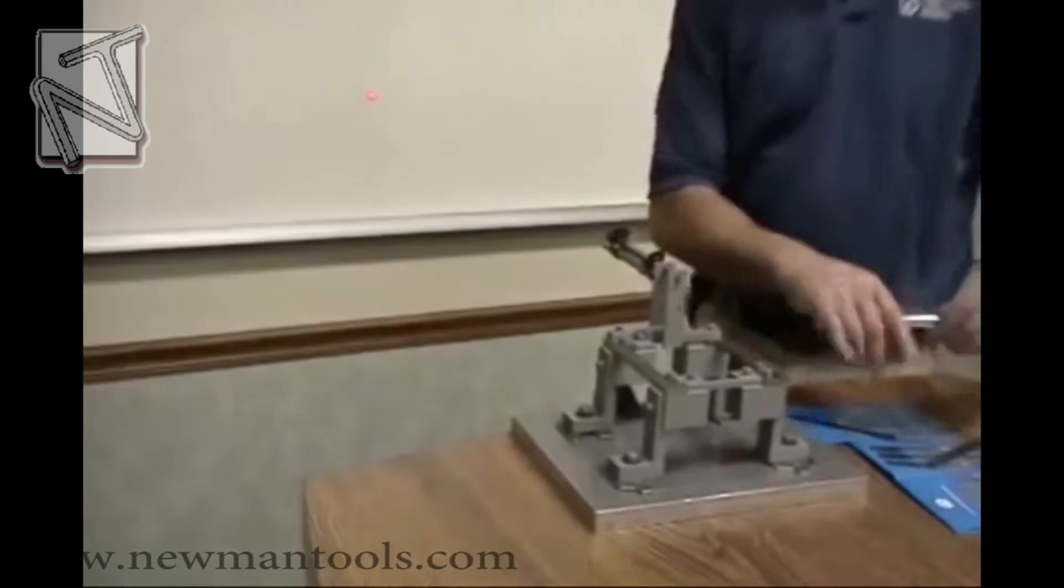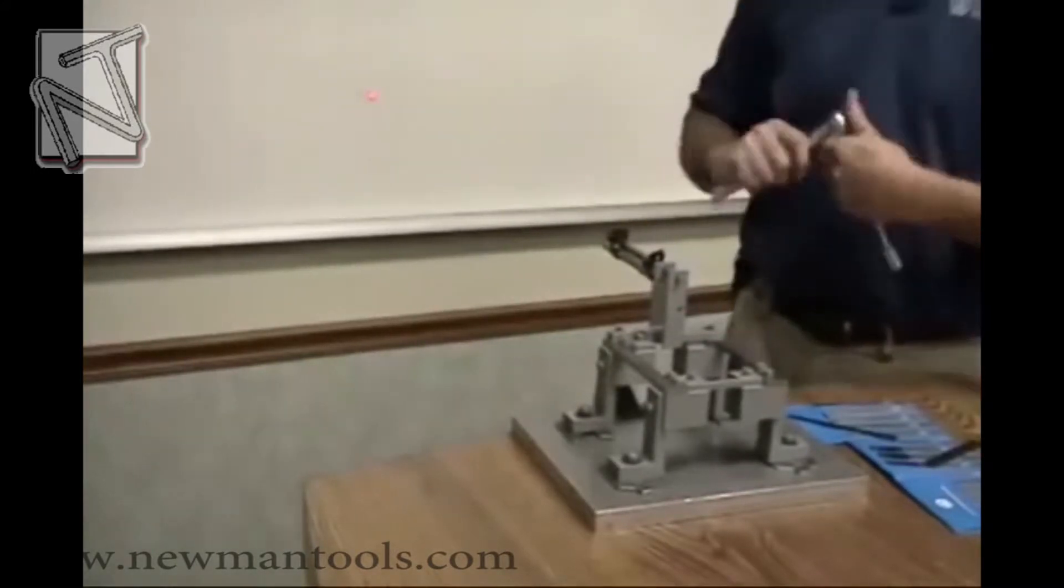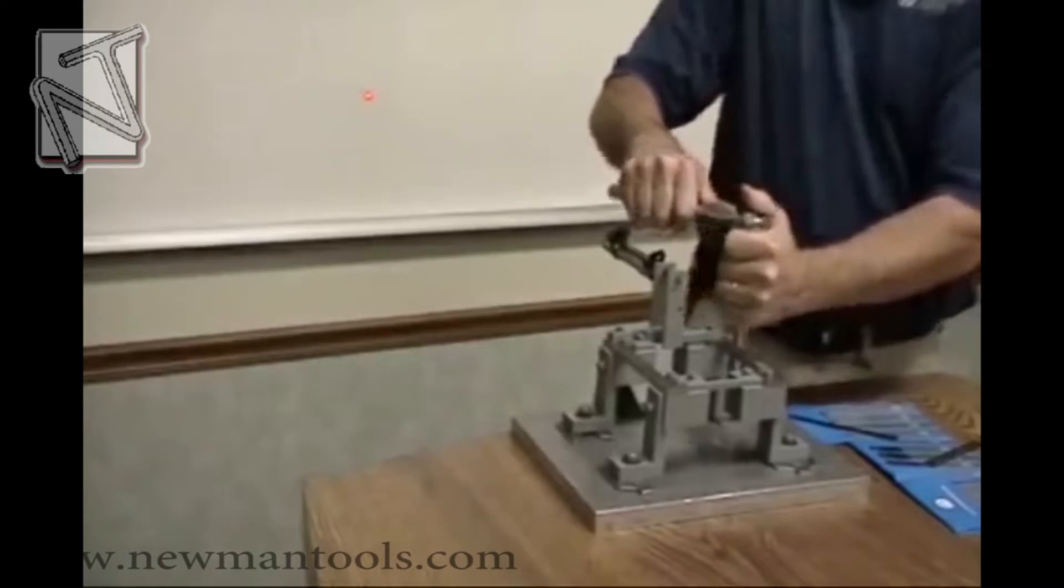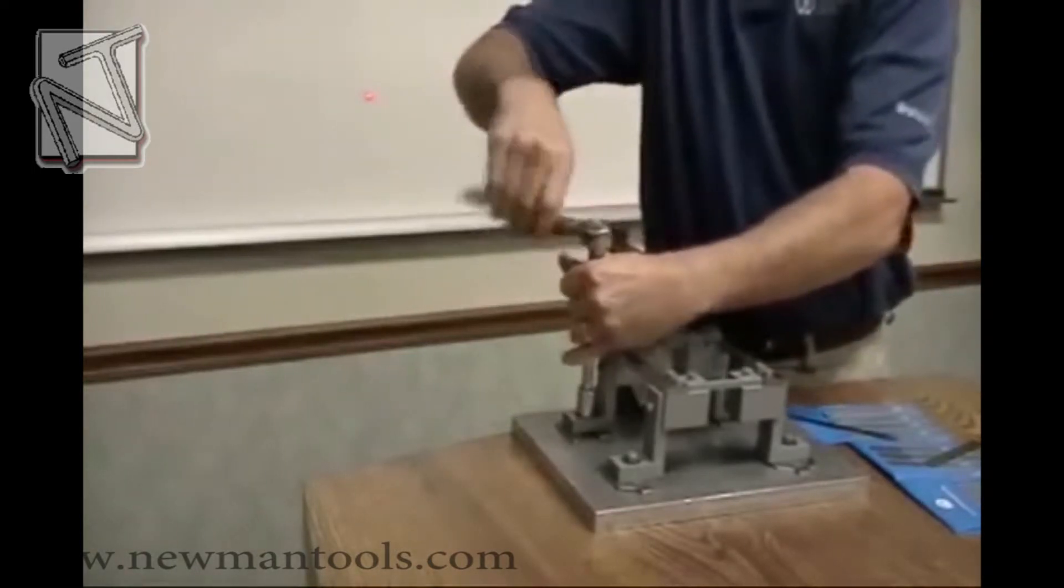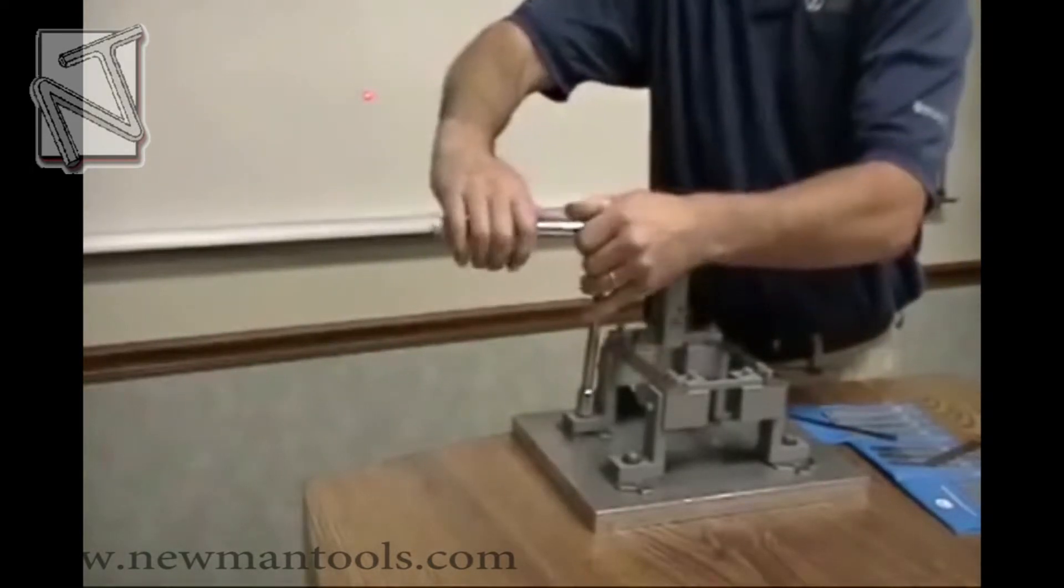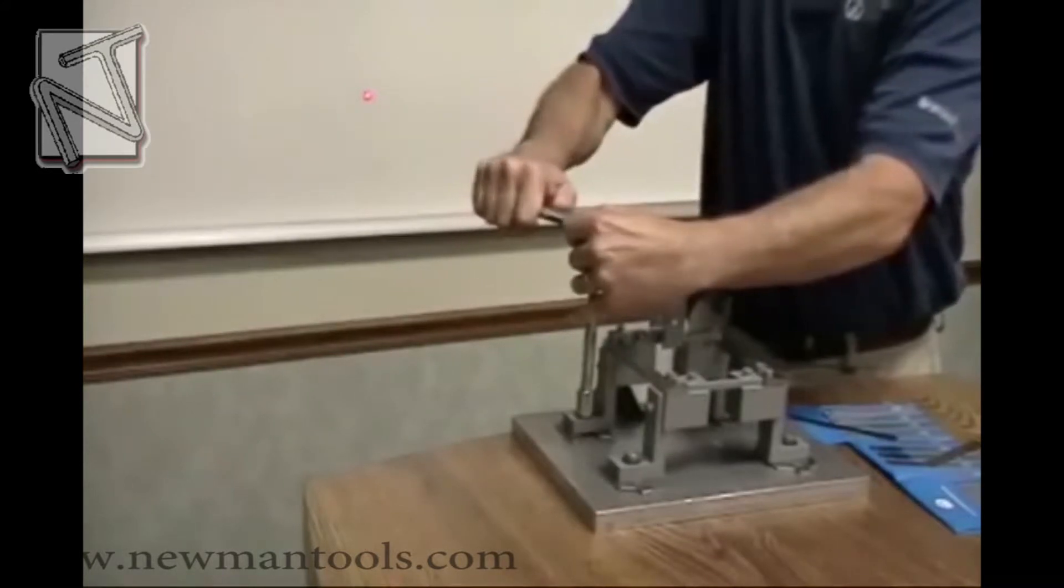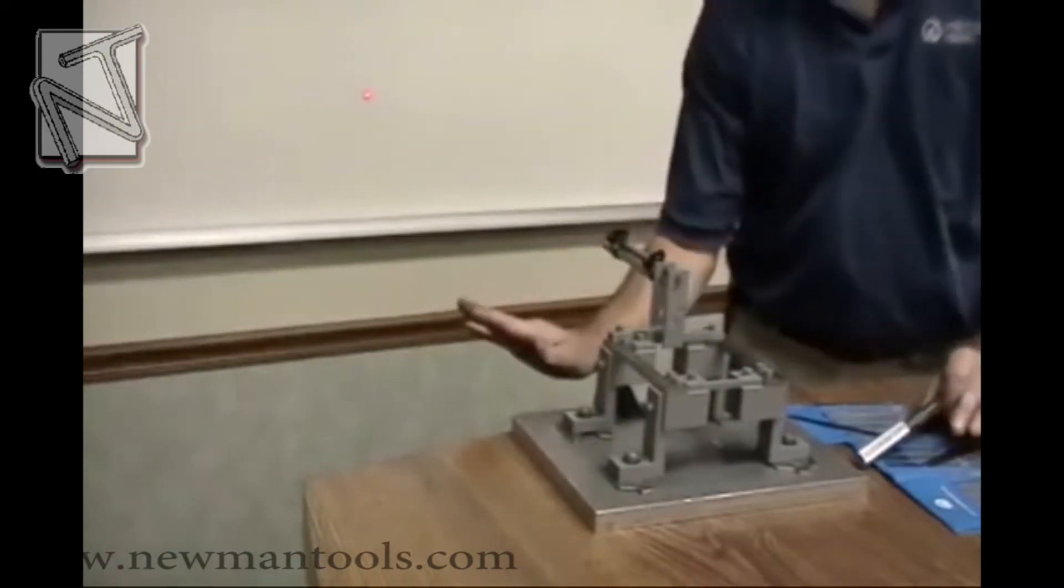First, I will tighten the good foot, foot number two, and then the one with the angularity problem, foot number one. This will make the toe pull down as it is tightened.